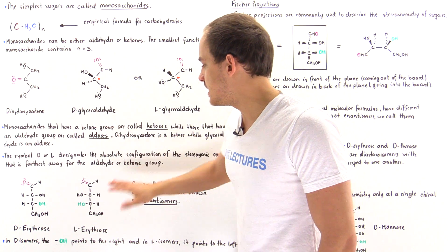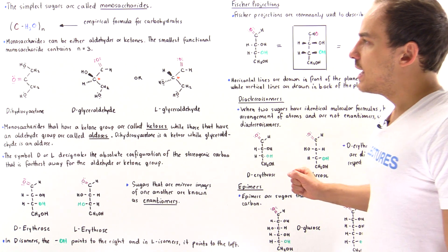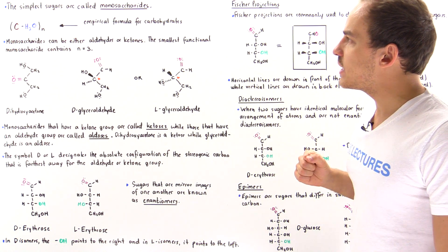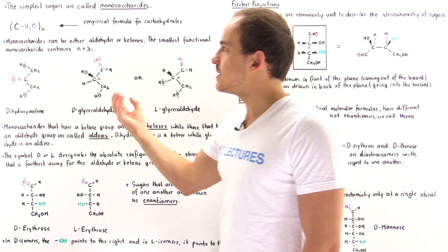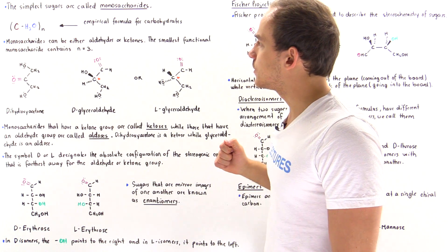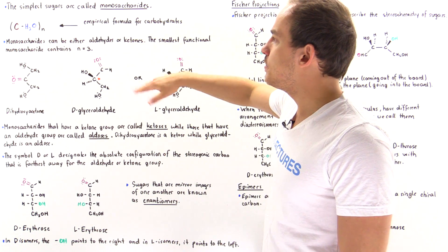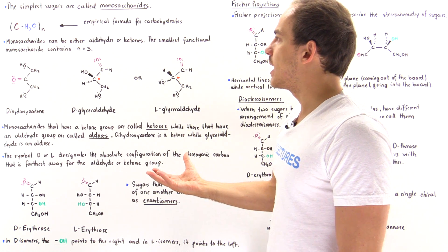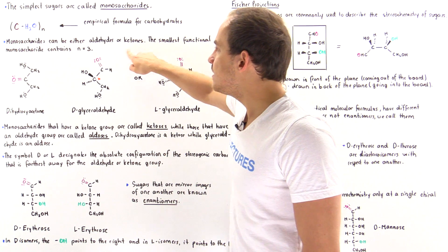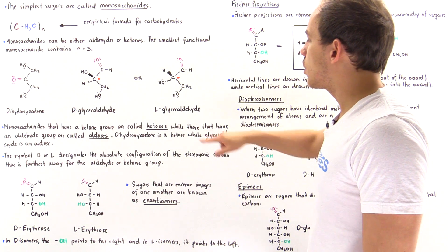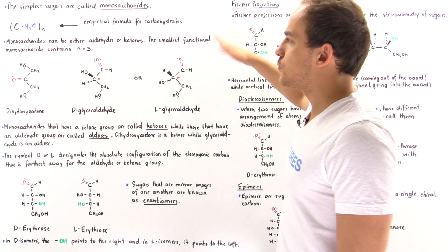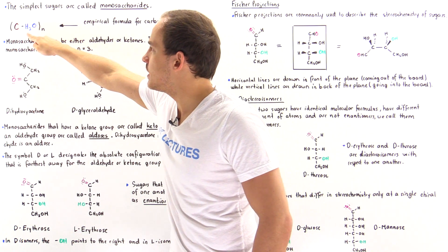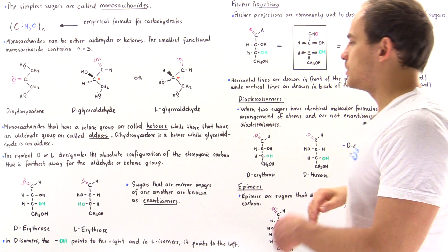The simplest sugars are monosaccharides, and we call them carbohydrates because the empirical formula tells us they consist of carbon as well as water molecules. Monosaccharides can either be aldehydes — known as aldoses — or ketones — known as ketoses. The smallest functional monosaccharides contain an N value of 3, giving 3 carbon atoms, 6 H atoms, and 3 oxygen atoms.